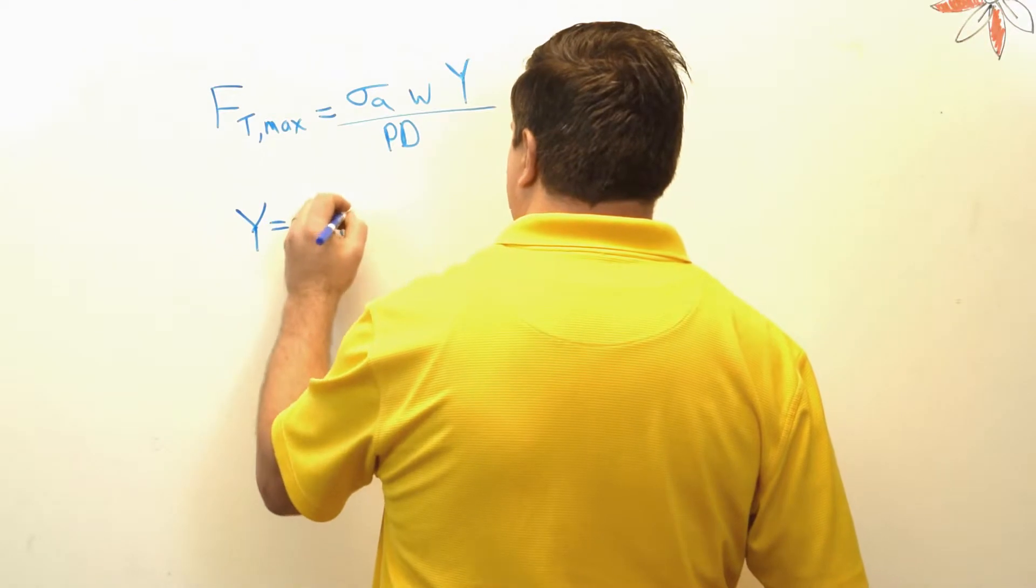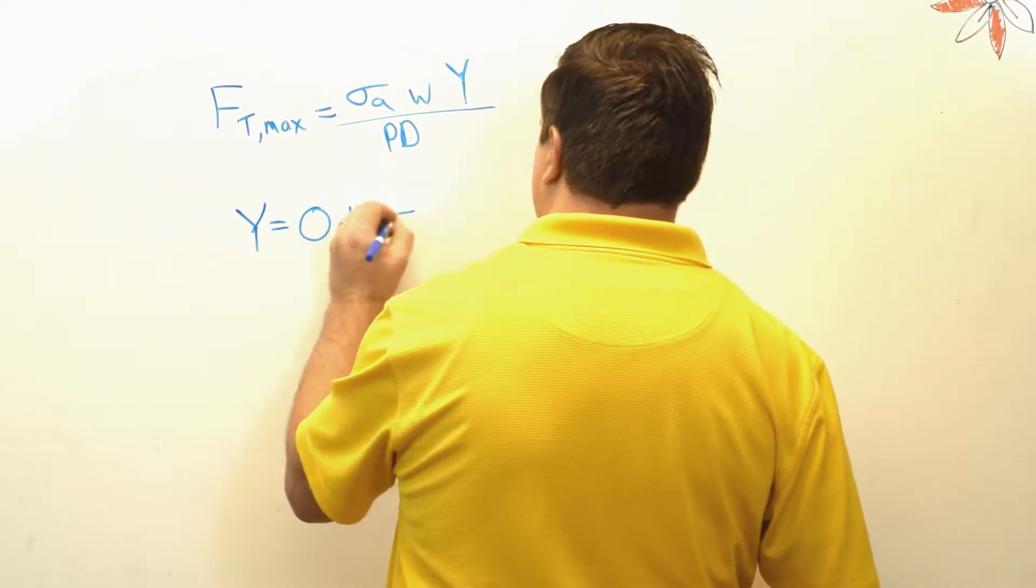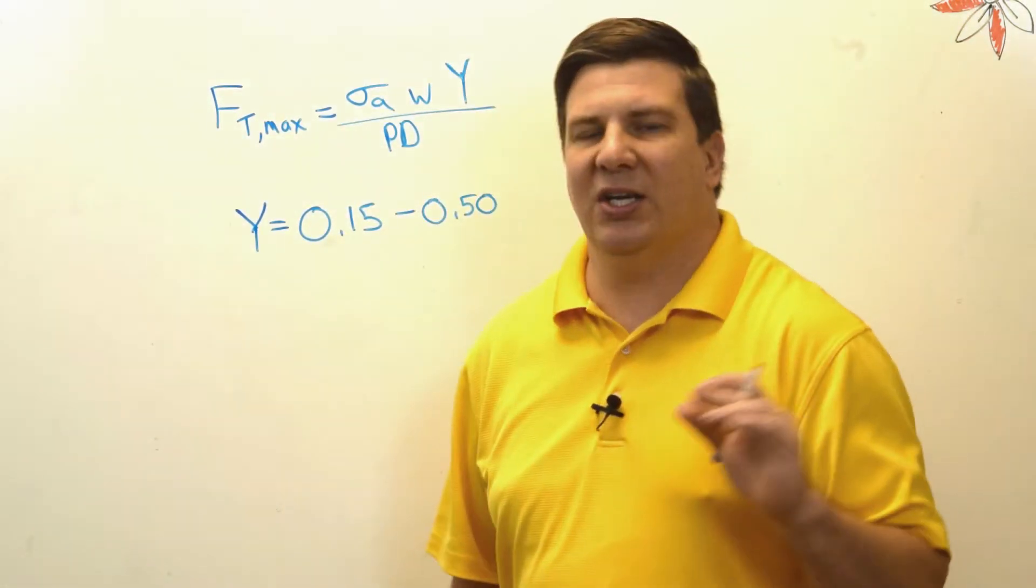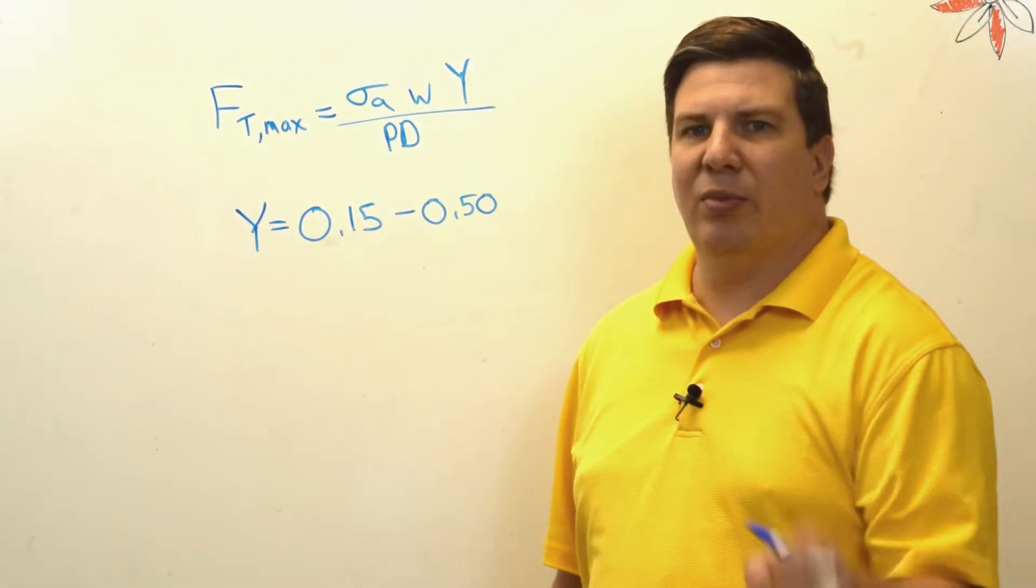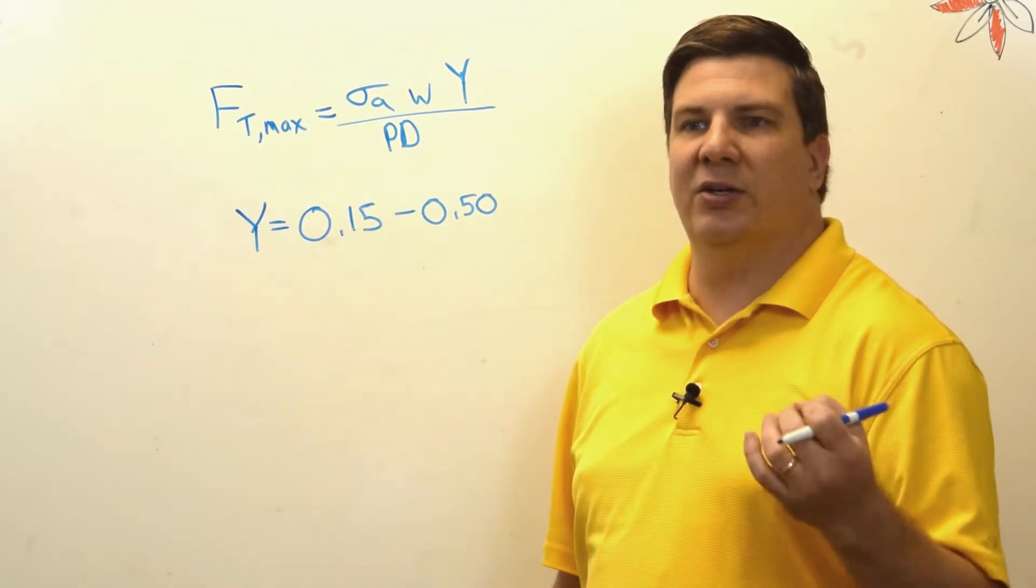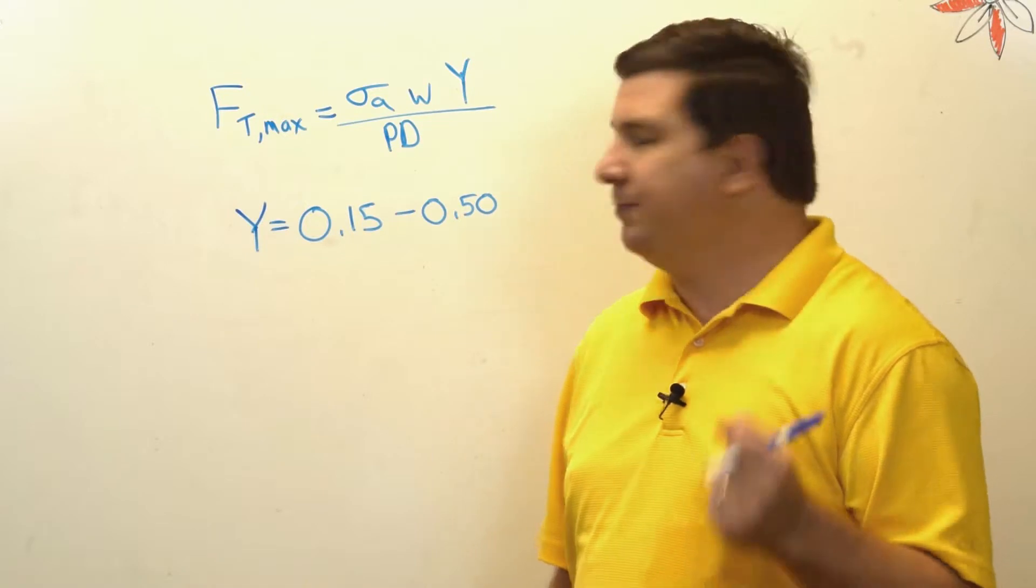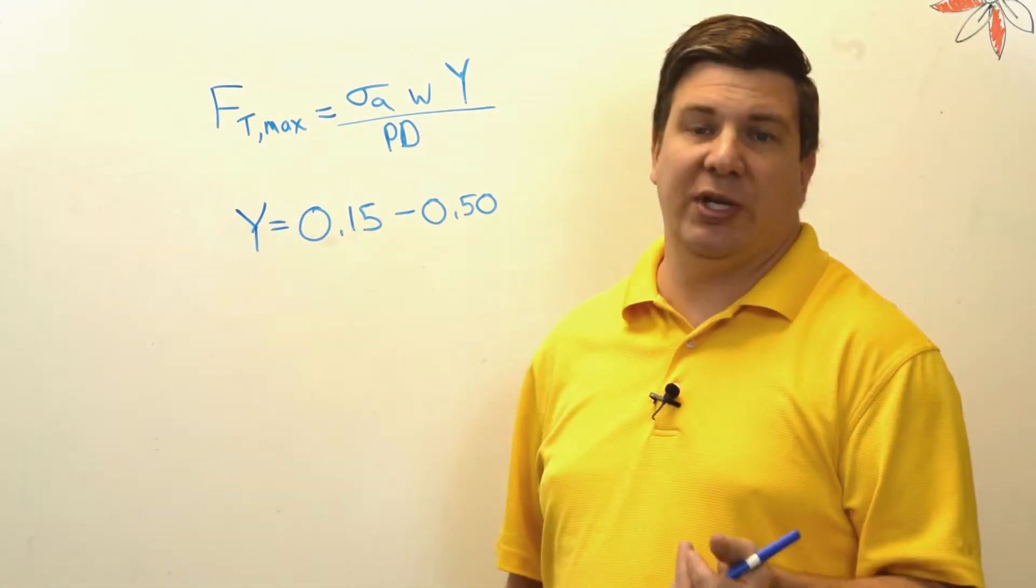And it usually ranges from about 0.15 to 0.50, and it's based on the number of teeth on your gear and it's also based on the pressure angle.